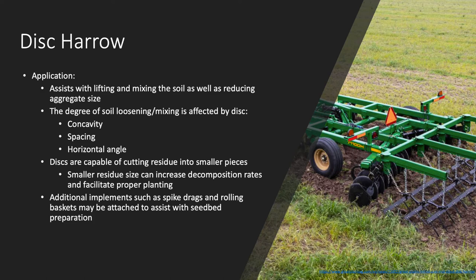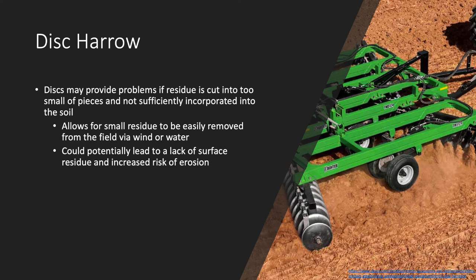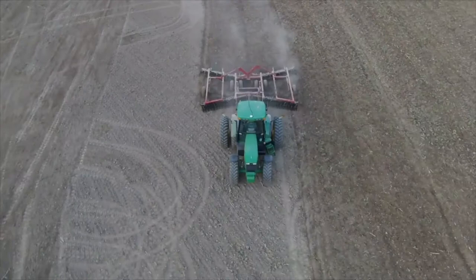Additional implements such as spike drags and rolling baskets may be attached to further assist with seedbed preparation. Disc harrows may provide problems if residue is cut into too small of pieces and not sufficiently incorporated into the soil. This can increase the chances that small pieces of residue may be easily removed from the field through actions of wind or water. Such potential to reduce the amount of surface residue may lead to an increased risk of erosion.